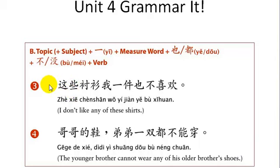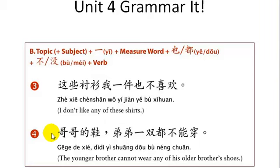Here are some other examples. 这些衬衫我一件也不喜欢 — I don't like any of these shirts. Now we have a verb instead of 没有. 哥哥的鞋弟弟一双都不能穿 — the younger brother cannot wear any of his older brother's shoes.